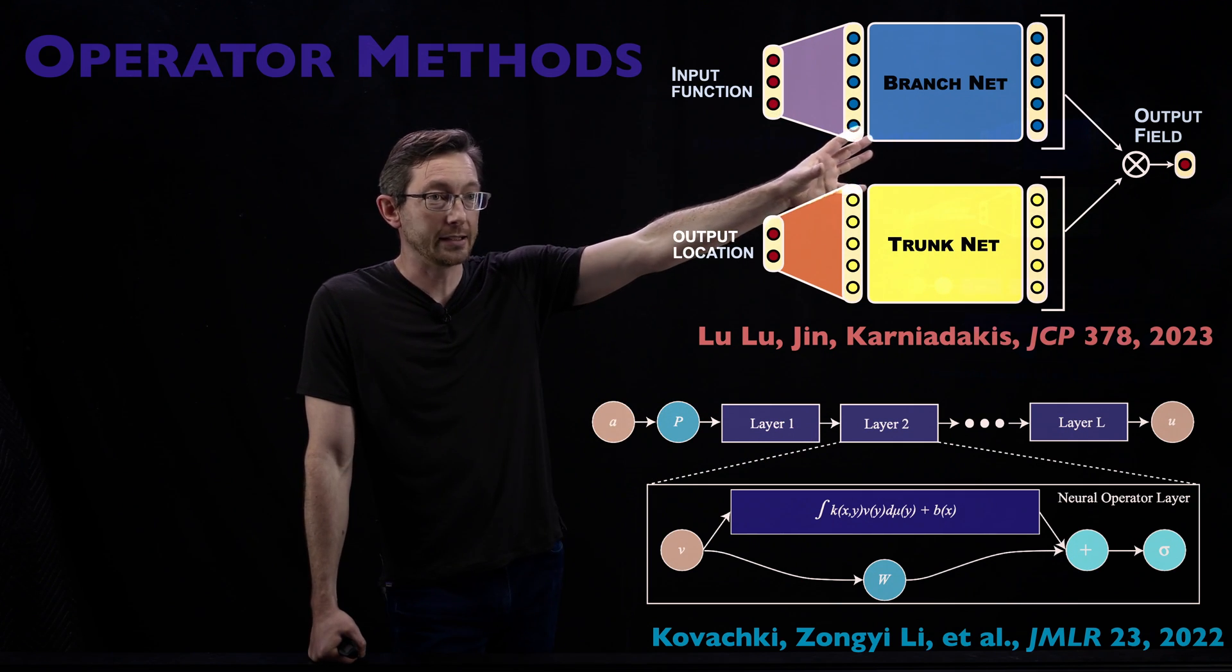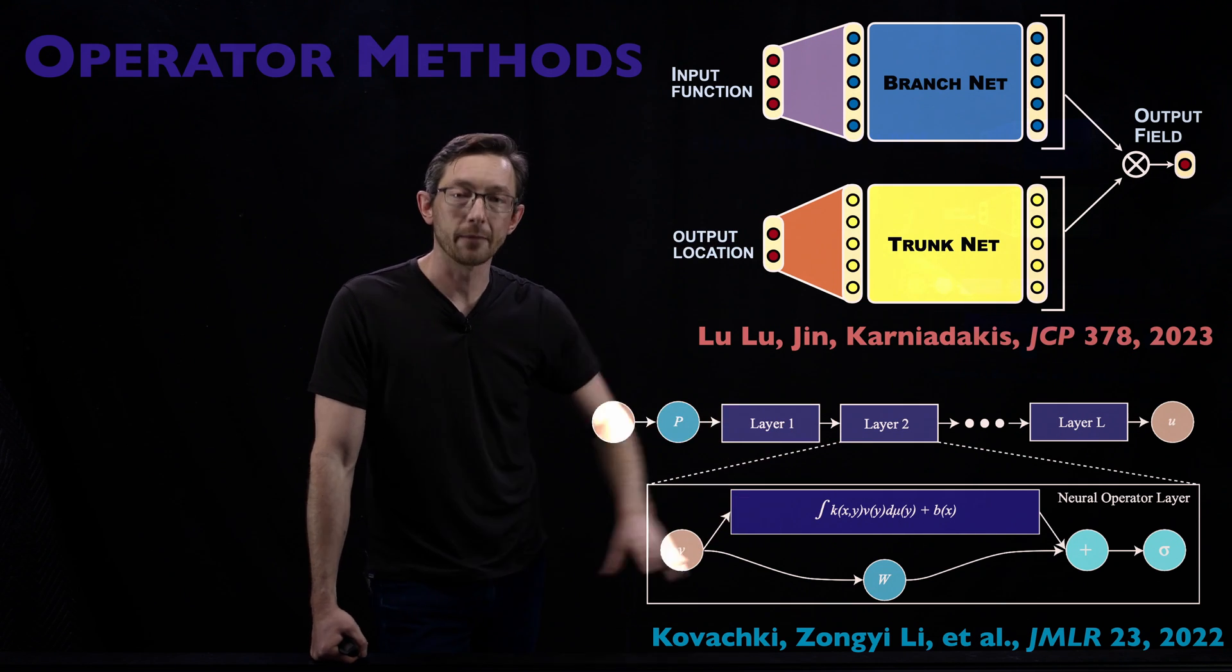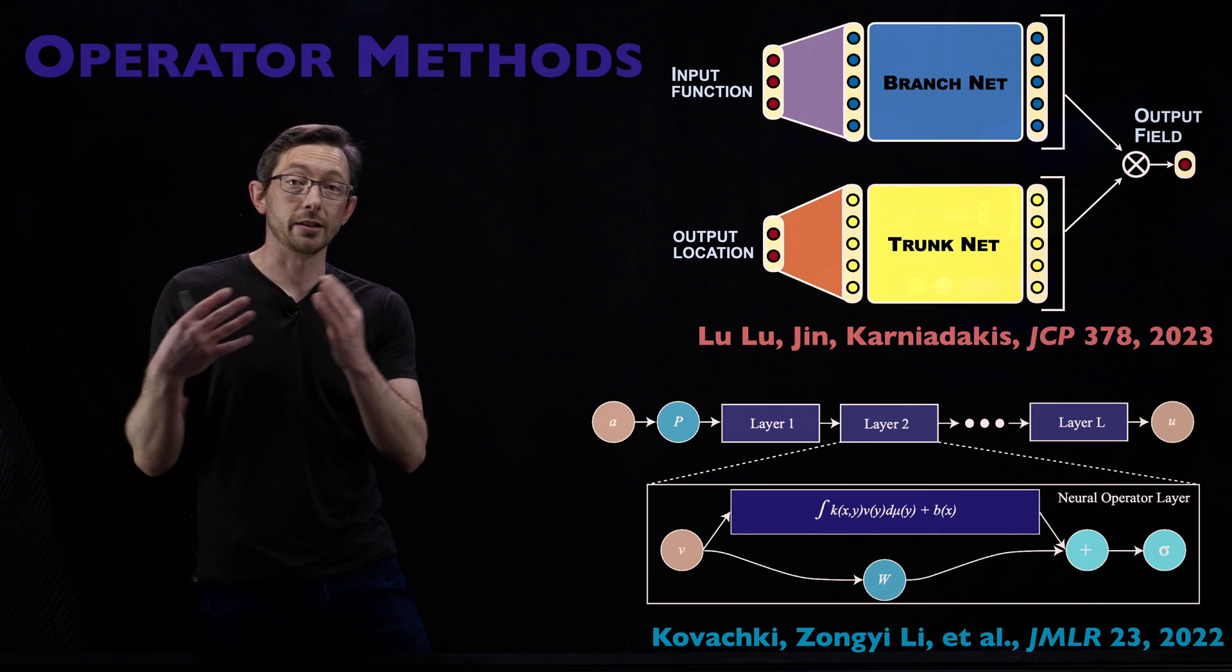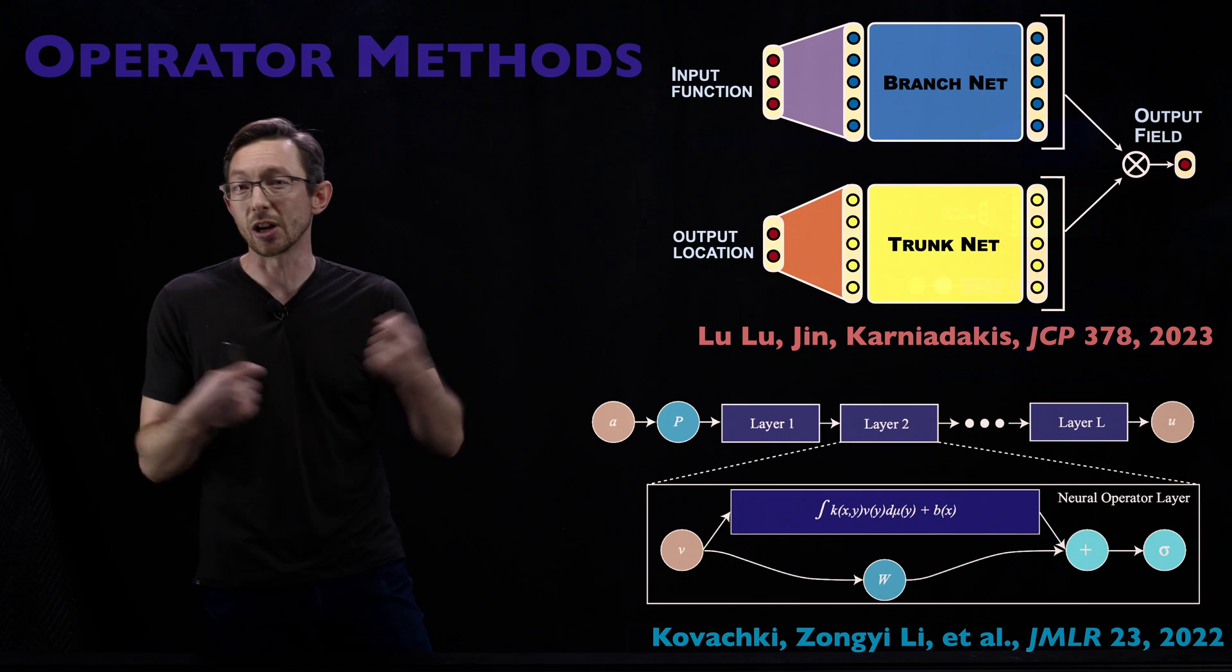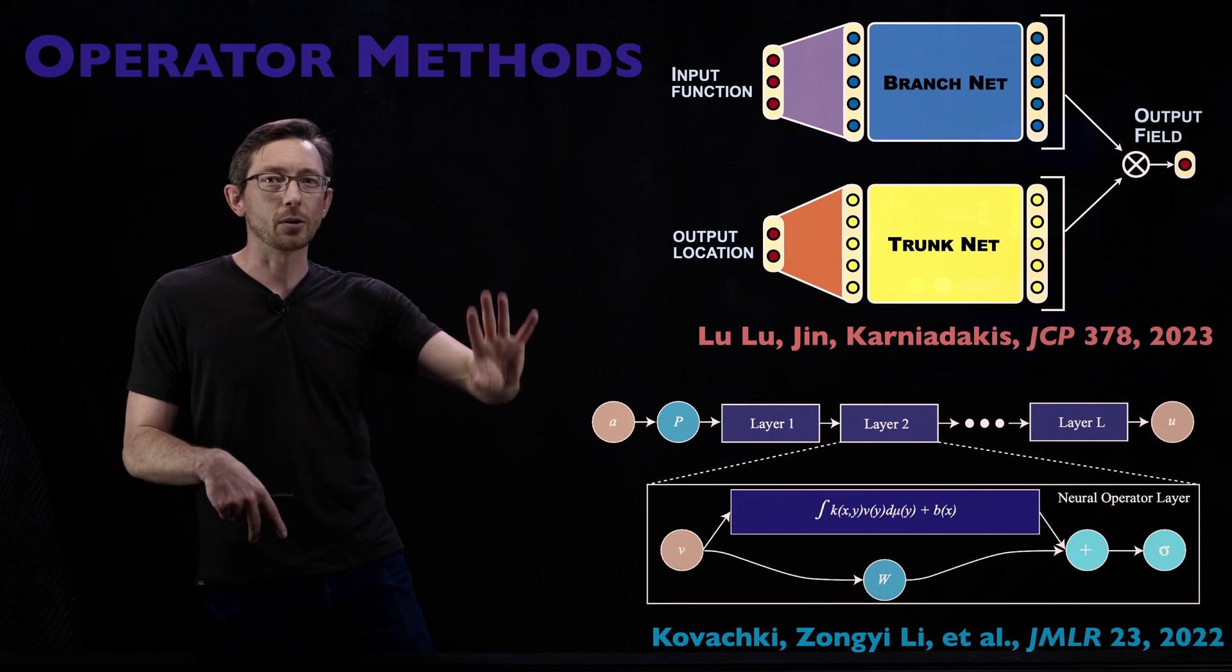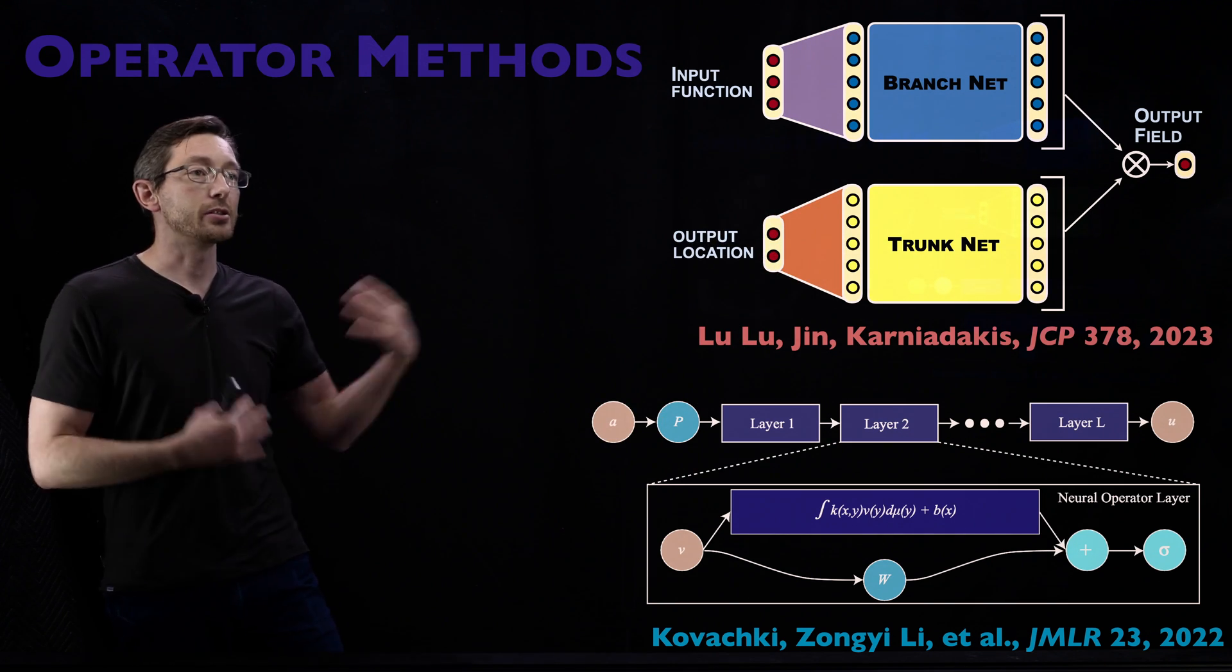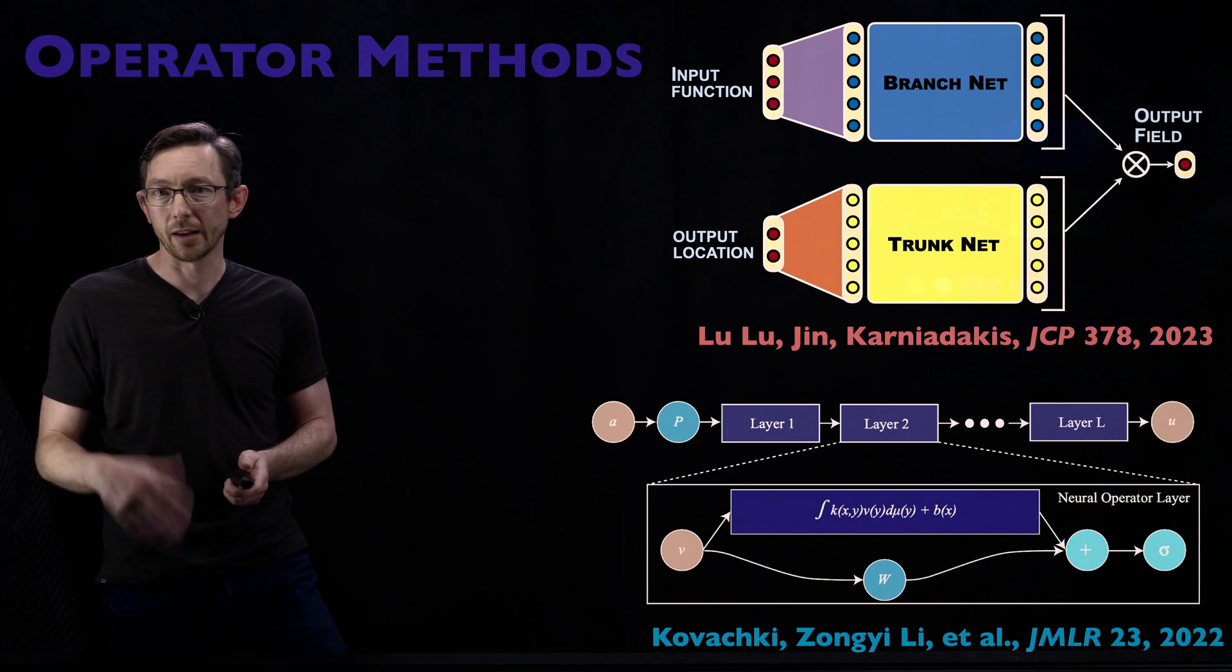That's the idea here: you can often use deep learning to learn these solution operators for pretty complicated physics. This is a DeepONet, a deep operator network architecture. This is a Fourier neural operator. We're going to start getting into how these work. Do they work for interpolation? Do they fail for extrapolation? How much training data do they need? I expect that we're going to see an increase in operator methods in the next five or ten years.